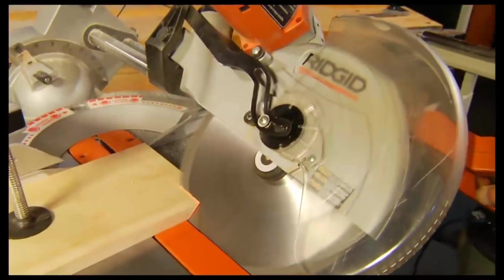Bevel cuts on the power miter saw can also be checked using the combination square.